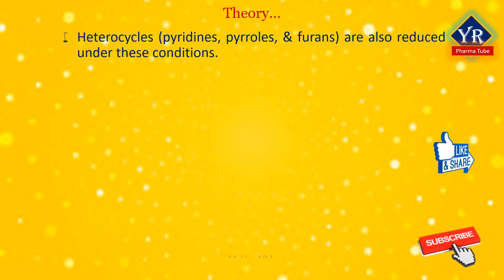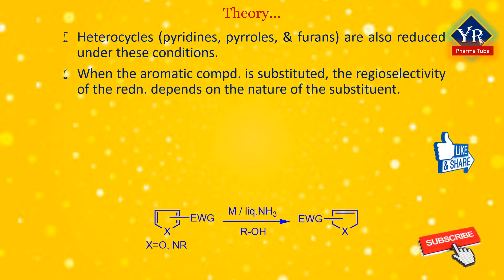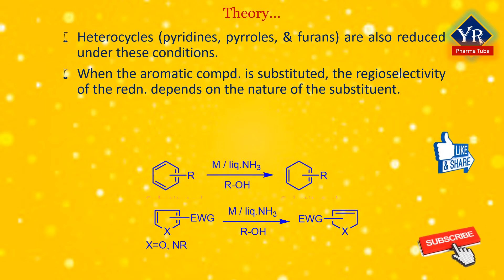Heterocycles such as pyridines, pyrroles, and furans are also reduced by Birch reduction using the same conditions. When the aromatic ring is substituted, the regioselectivity of the reduction depends on the nature of the substituent. If the substituent is electron donating, the rate of the reduction is lower compared to the unsubstituted compound and the substituent is found on the non-reduced portion of the new product. In case of electron withdrawing substituents, the result is the opposite. Ordinary alkenes are not affected by the Birch reduction conditions and double bonds may be present in the molecule if they are not conjugated with an aromatic ring.